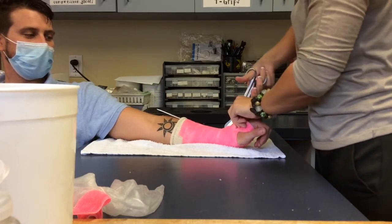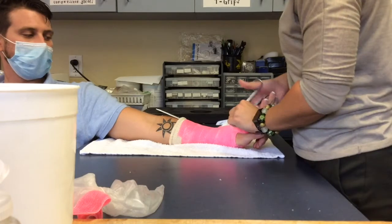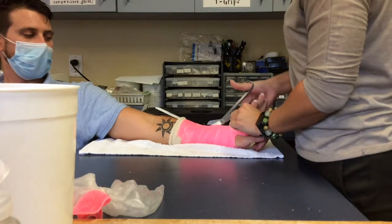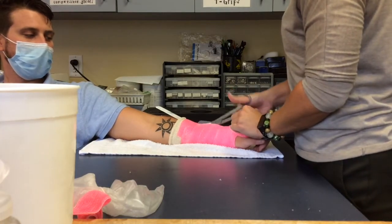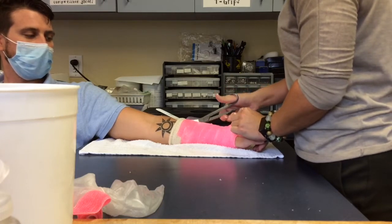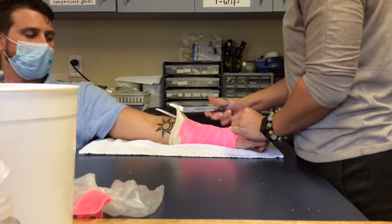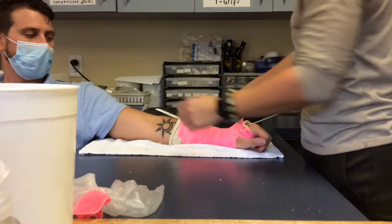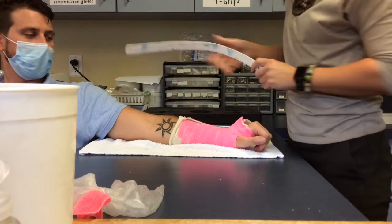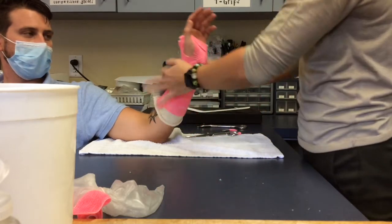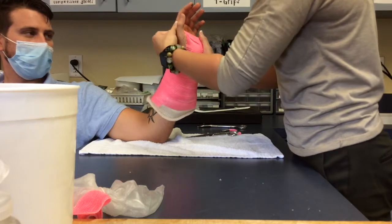You also don't want to wait too long because it will be extremely hard to cut the delta cast after it is too hard. Cut along the cutting strip. Now you can remove the cutting strip and remove the cast from your patient.